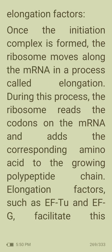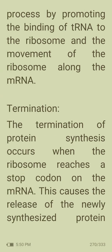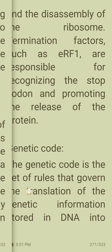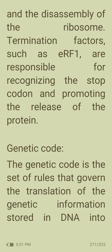Once the initiation complex is formed, the ribosome moves along the mRNA in a process called elongation, reading codons and adding corresponding amino acids to the growing polypeptide chain. Elongation factors such as EF-Tu and EF-G facilitate this process by promoting binding of tRNA to the ribosome and movement of the ribosome along the mRNA. Termination occurs when the ribosome reaches a stop codon, causing release of the newly synthesized protein; termination factors such as ERF1 recognize the stop codon and promote protein release.